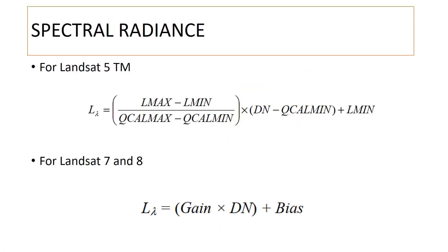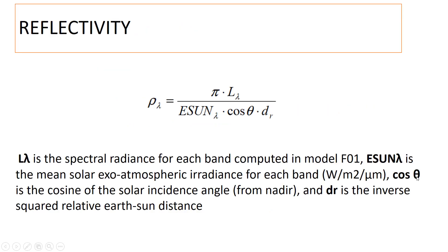For spectral radiance, we will focus on Landsat 8, not Landsat 5. To compute spectral radiances for each band, we multiply the gain by the digital number of each pixel and add a bias. These gain and bias values are contained in the header files or metadata of each image.